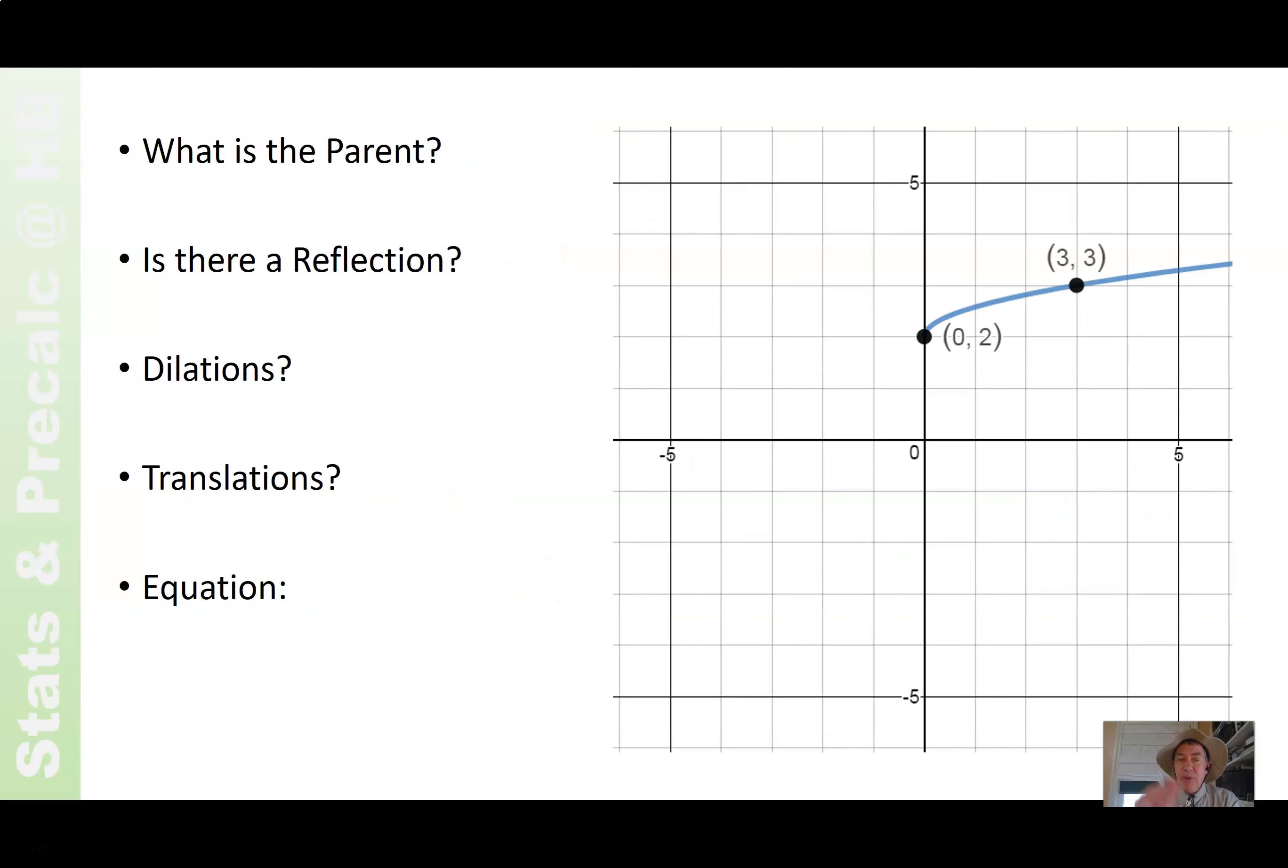Think about this one for a minute. What's the parent? Is there reflection, dilation, translation, and then the equation? If you want to pause and do it yourself, you can, and I will continue now doing it from here. The parent. Square root of x. We're starting here and going up and to the right, so there is no reflection.